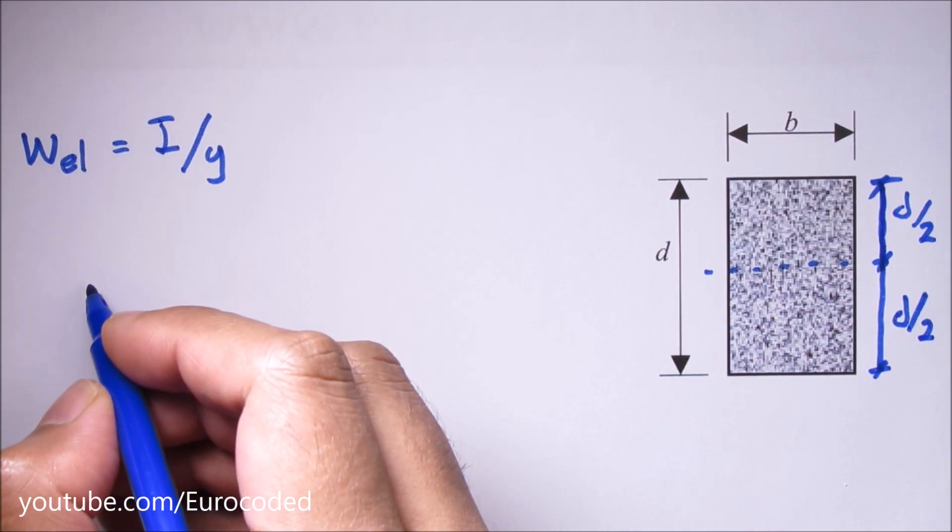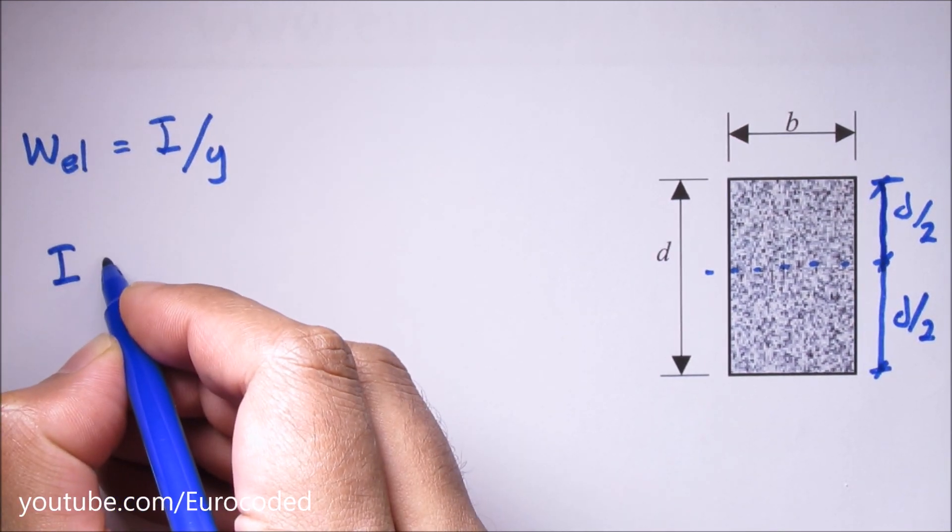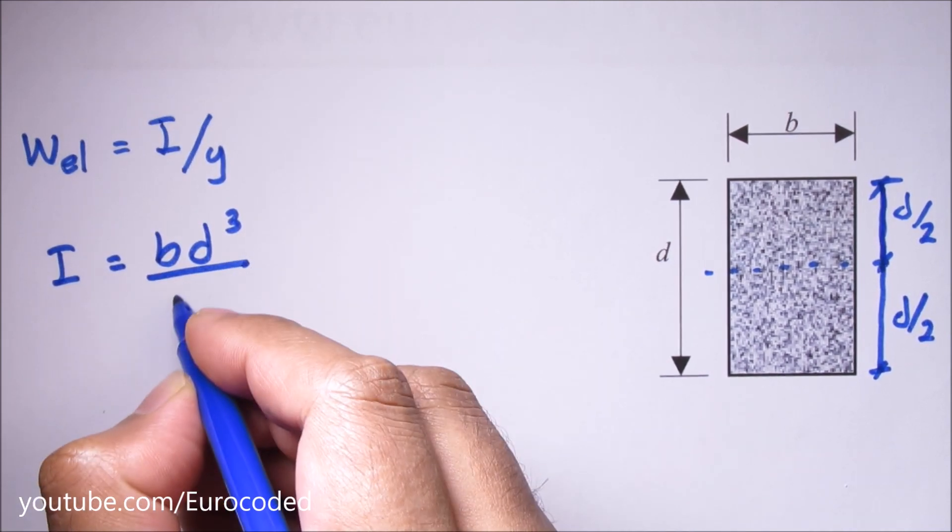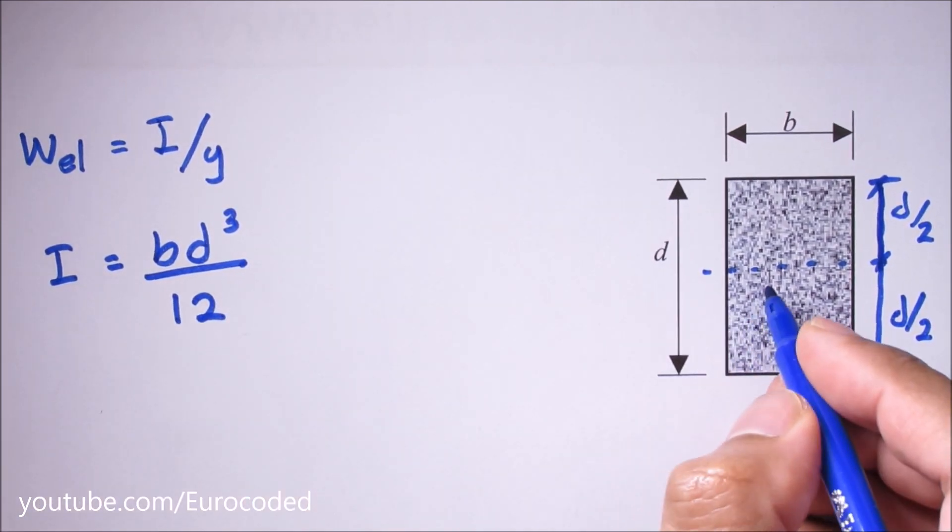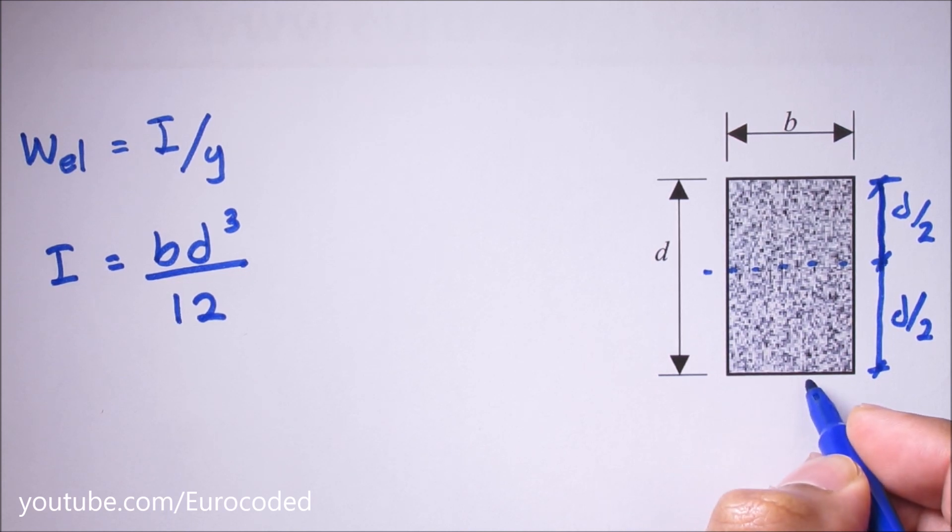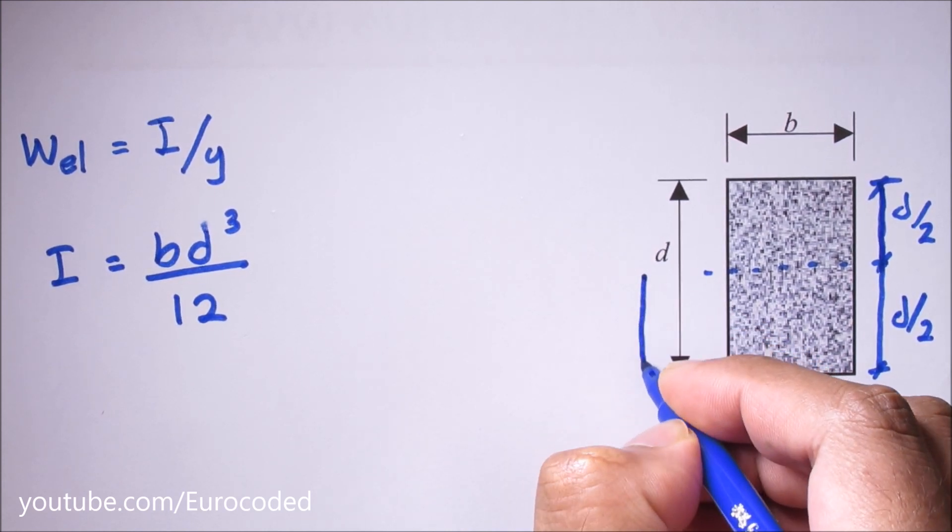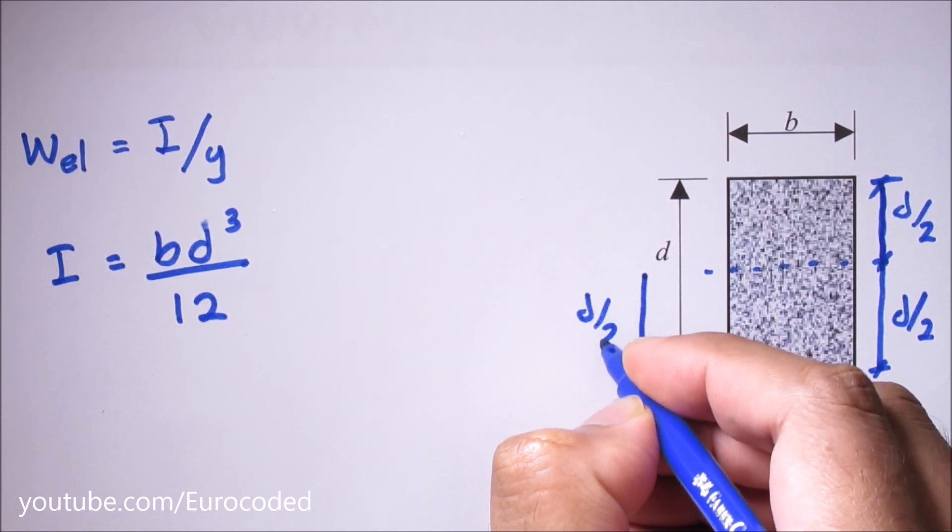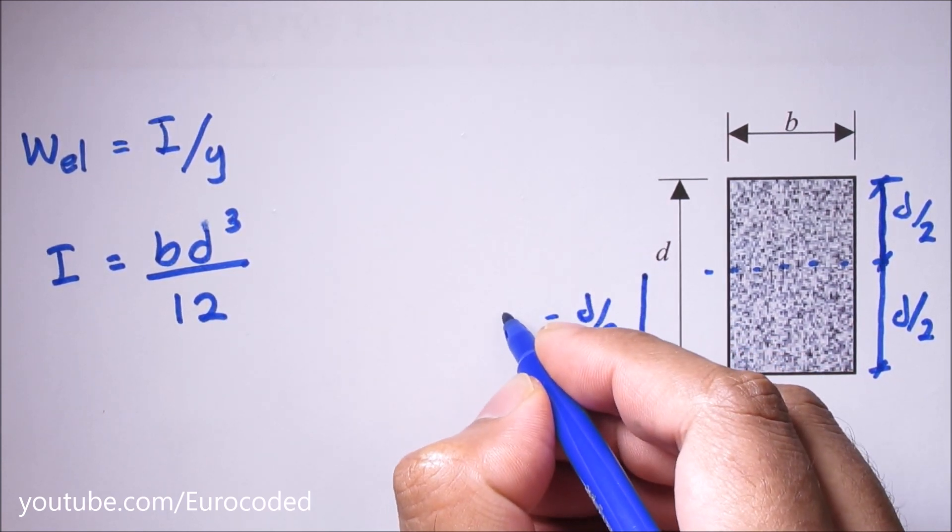And we can write second moment of area I is equal to bd³ over 12. And if we look at this bottom fiber, we know the distance from the neutral axis to this point is d over 2, that is equal to Y.